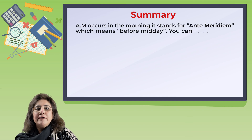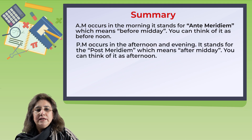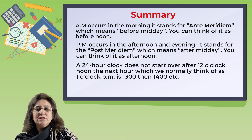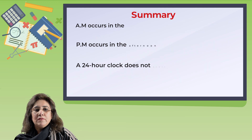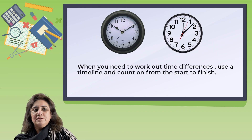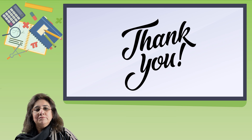Let's look at the summary of the lesson. AM occurs in the morning — it stands for ante-meridian, which means before midday; you can think of it as before noon. PM occurs in the afternoon and evening — it stands for post-meridian, which means after midday; you can think of it as afternoon. A 24-hour clock does not start over after 12 o'clock noon; the next hour is 1300, then 1400, and so on. When you need to work out time differences, use a timeline and count on from the start to finish. Hope you have enjoyed the lesson — thank you.